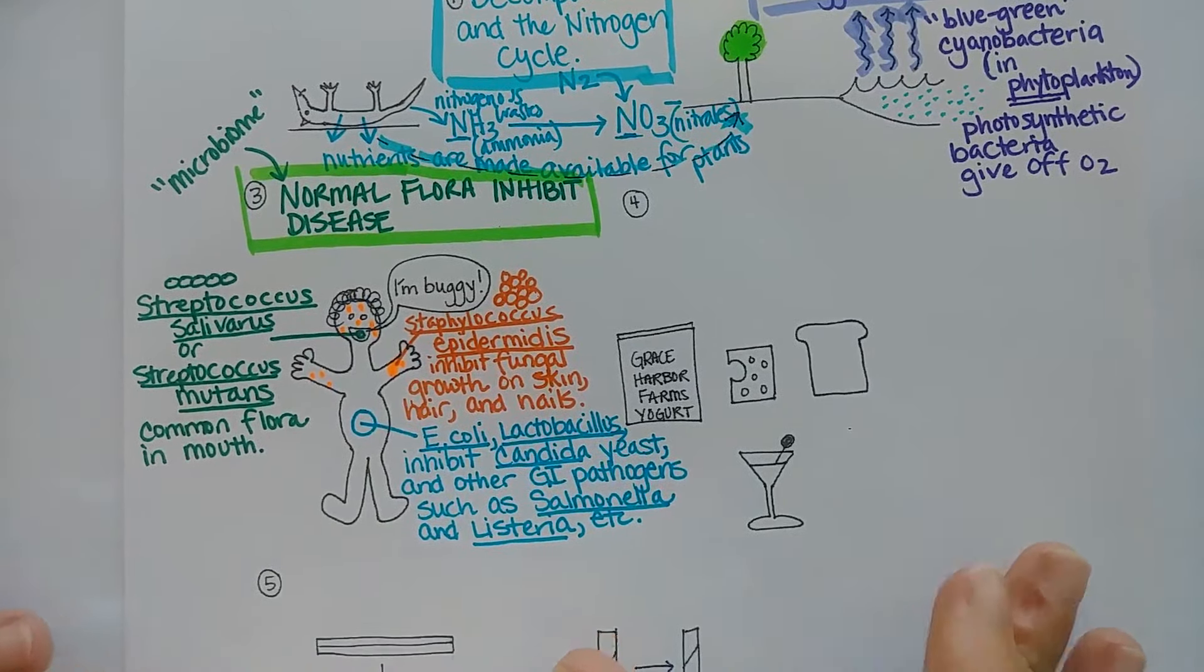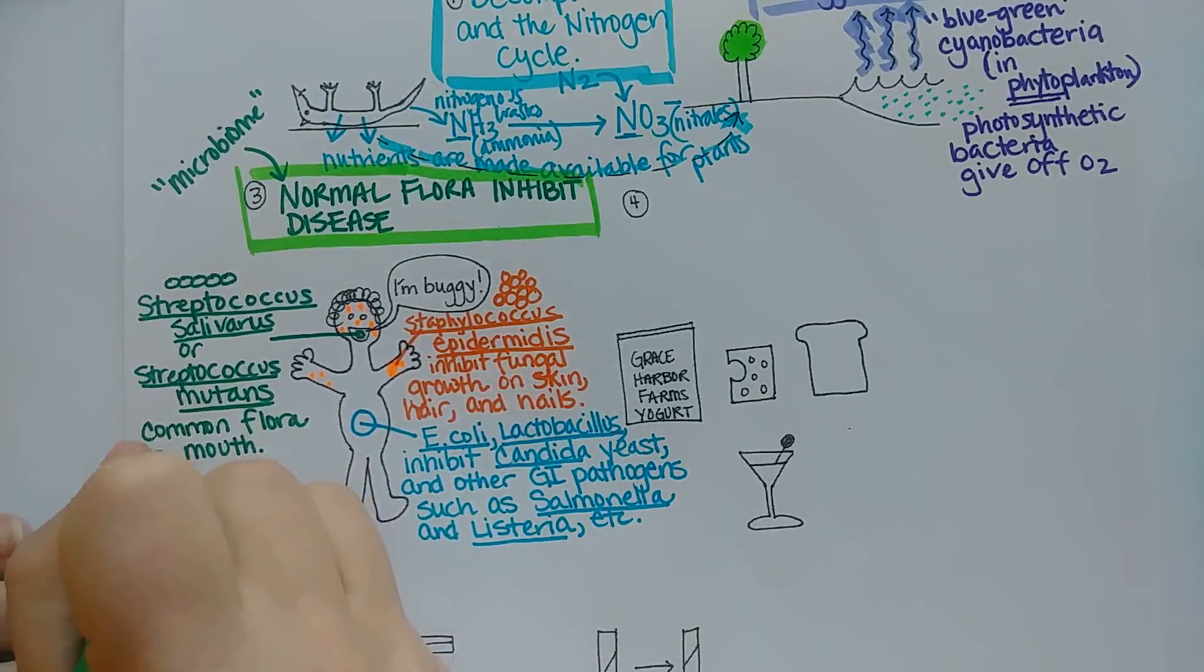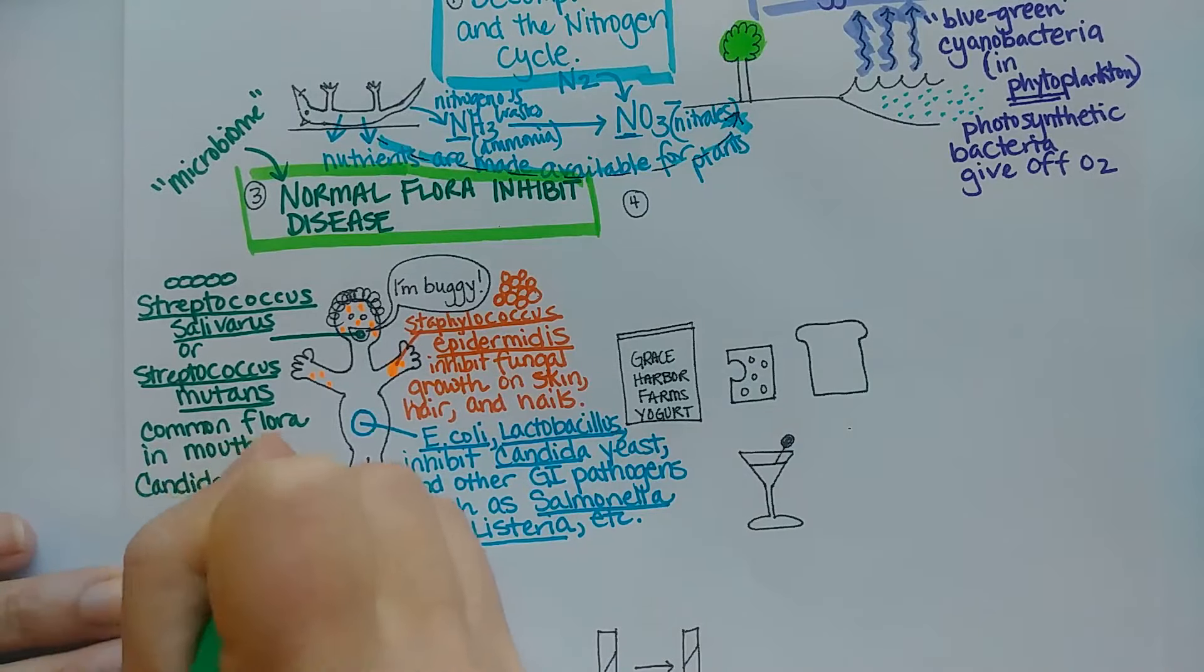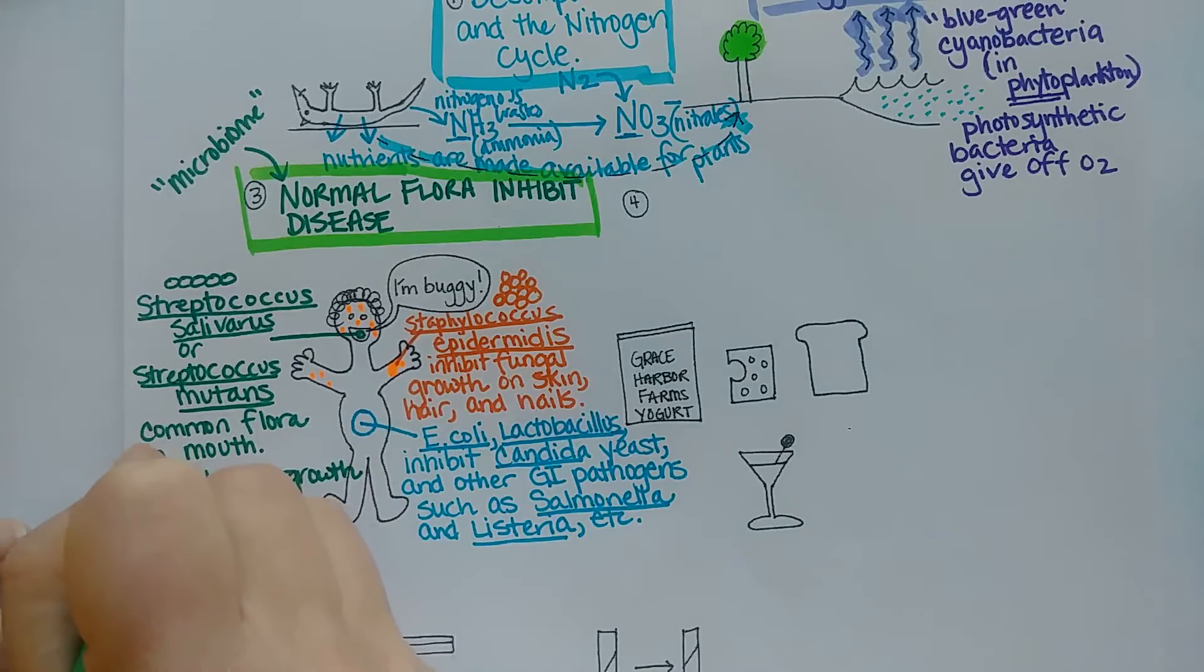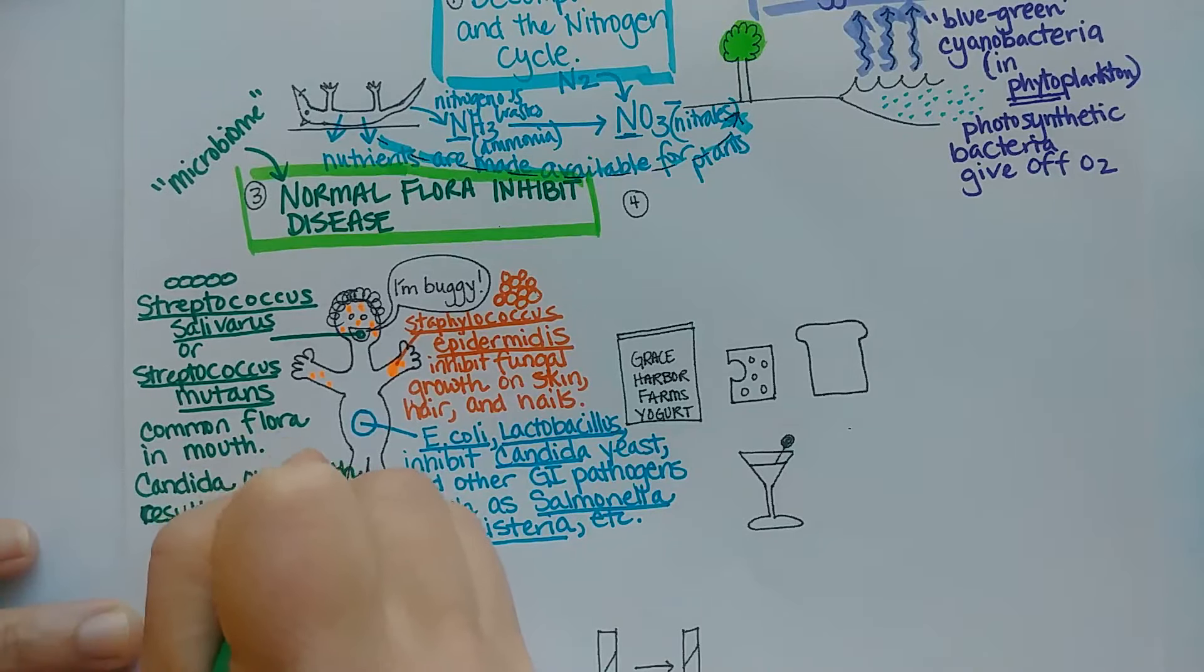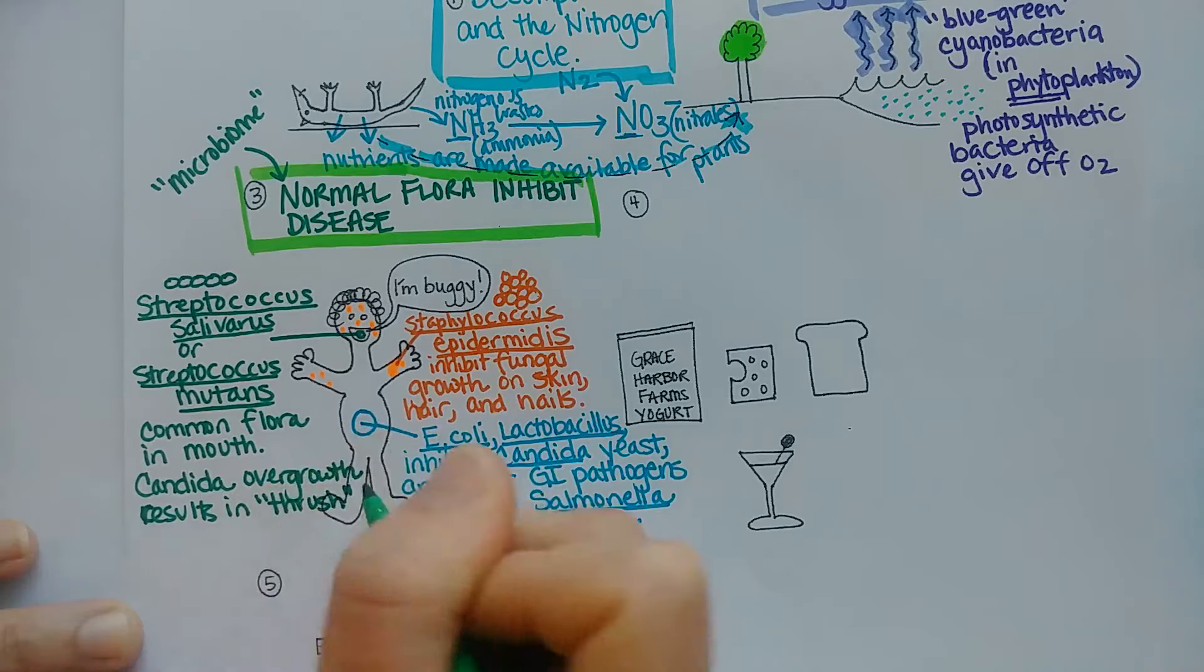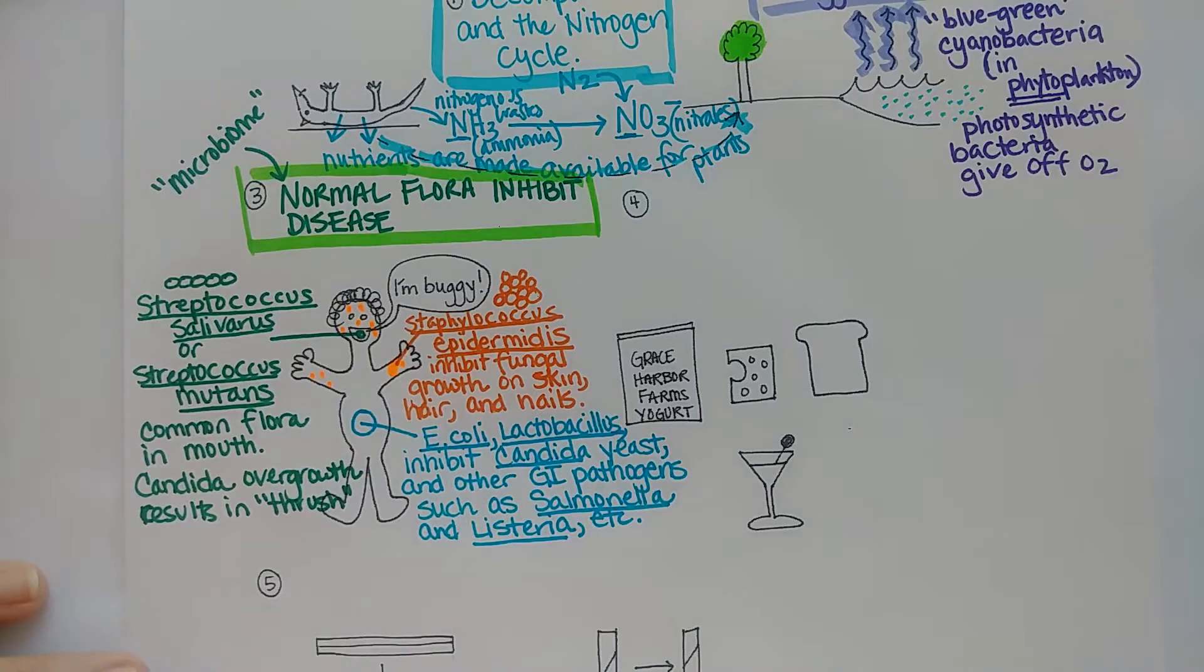If you get Candida overgrowth in the mouth, this results in what we call thrush, and that's when someone's tongue turns all white and they have fungal growth on their tongue. Candida literally means bright white, and so when it grows, it grows in bright white colonies.